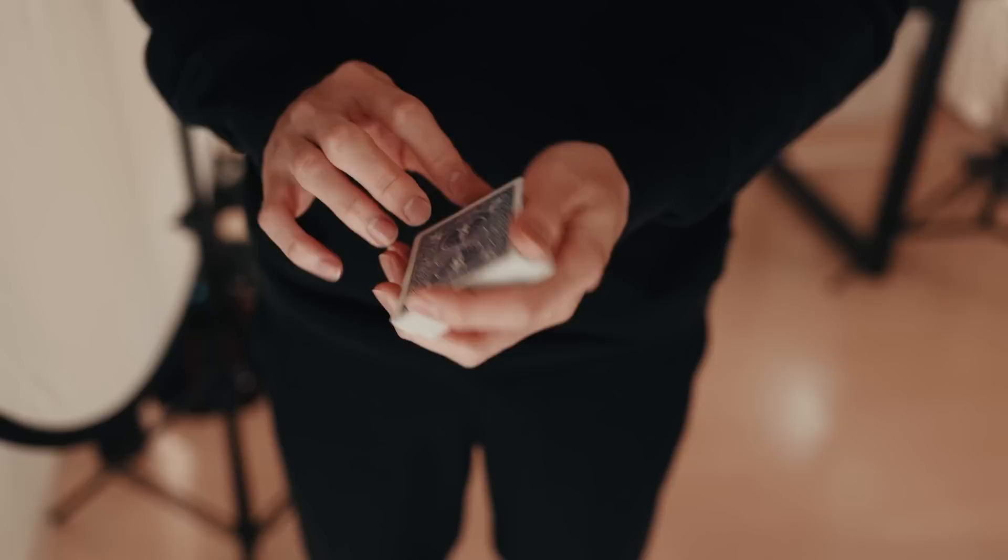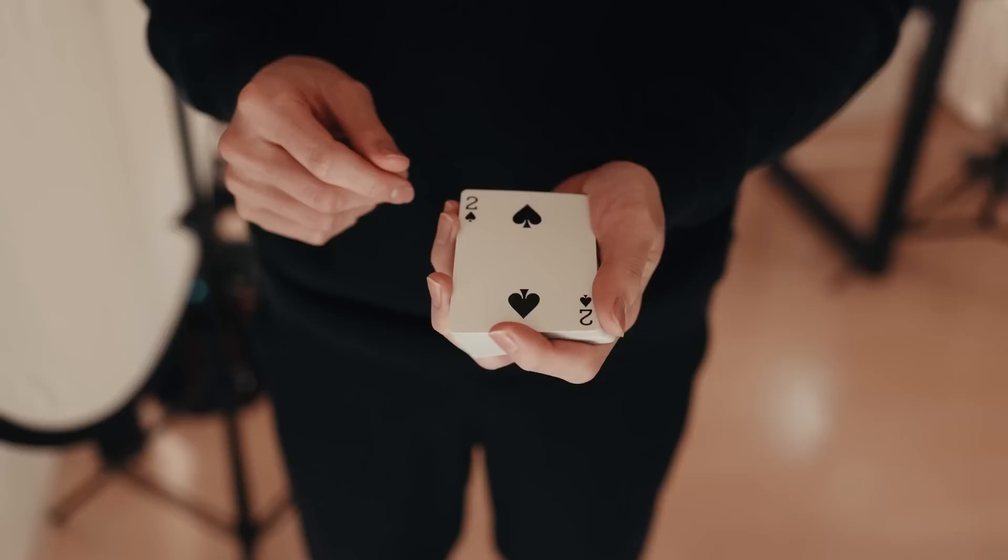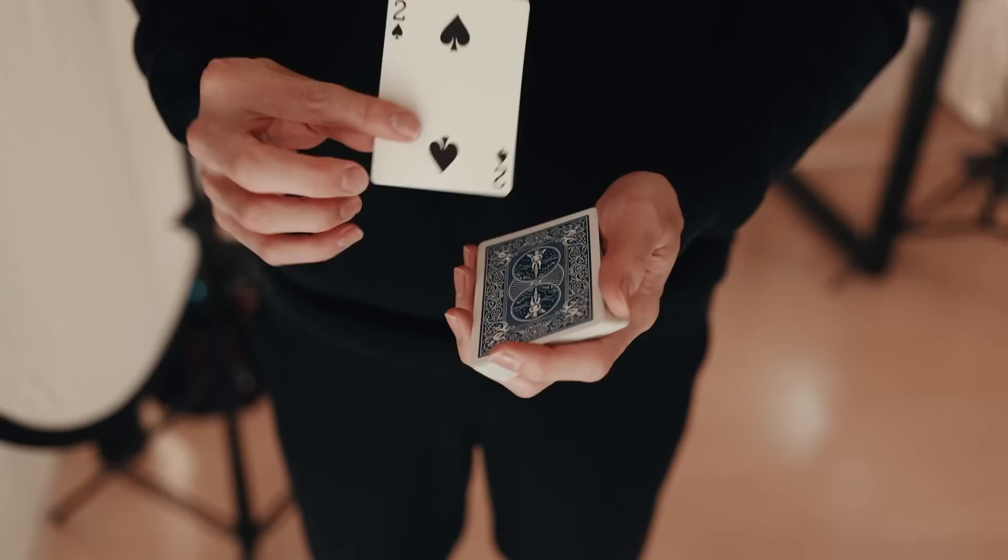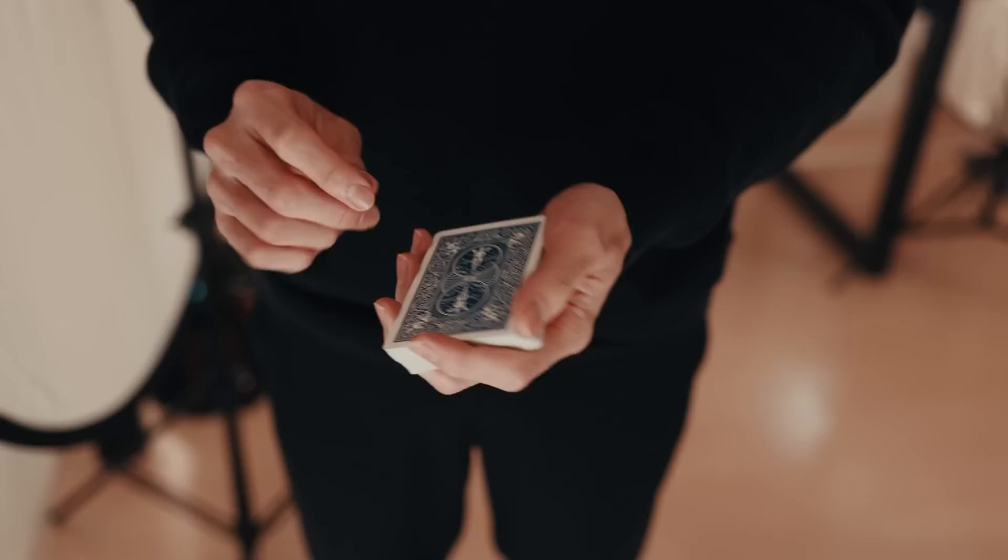As you can see, it looks like we're taking the two of spades and putting it in the middle of the deck, but now it's on top. And here's the second version. The two goes in the middle of the deck and now it's back on top. And this is the final and in my opinion, most convincing version that I'll teach you now. The two goes back into the deck, yet it's still on top.